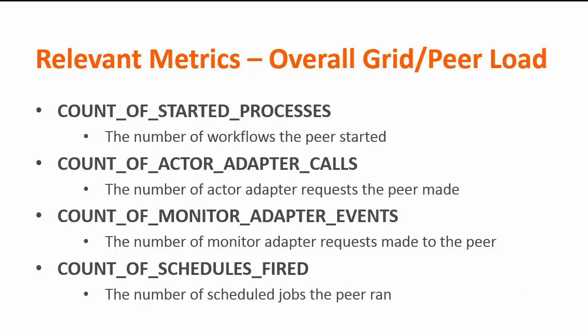The last set of metrics are historical metrics. These only reset when you clear the grid or peer on a restart, so you can use them historically and compare them to past values to get trends over time. If you look at count of started processes now, then look at it in the health metrics an hour ago, you'll see how many processes have started since then. You can get a picture of what the general load is — whether it's higher in the last five minutes than normal, or in the last hour, or day, or week, depending on how far back your grid logs go.